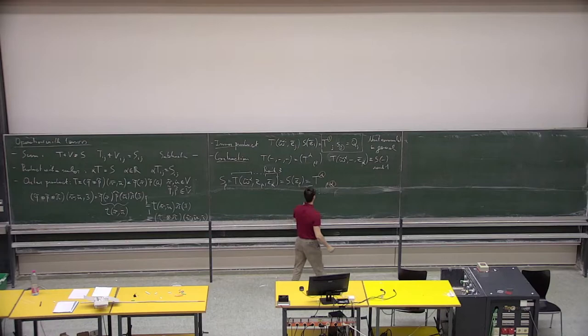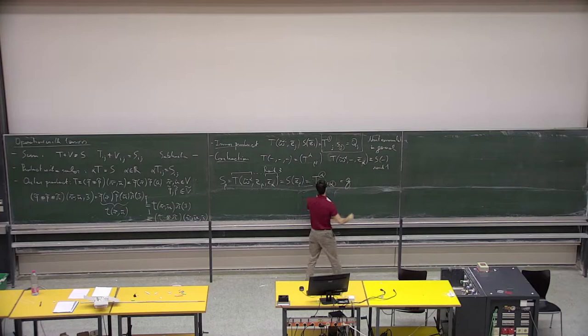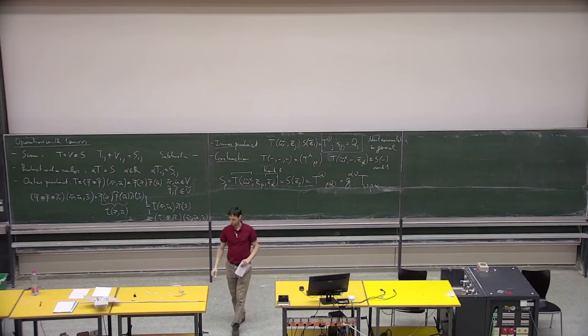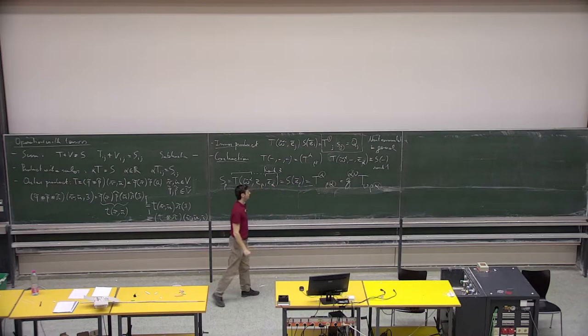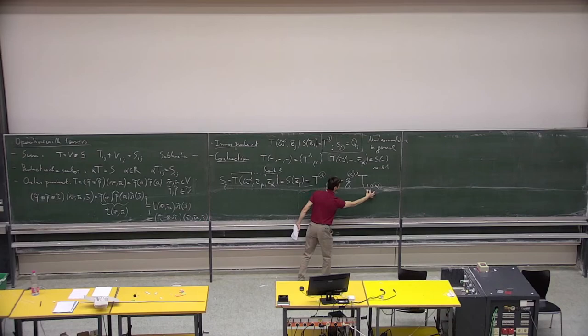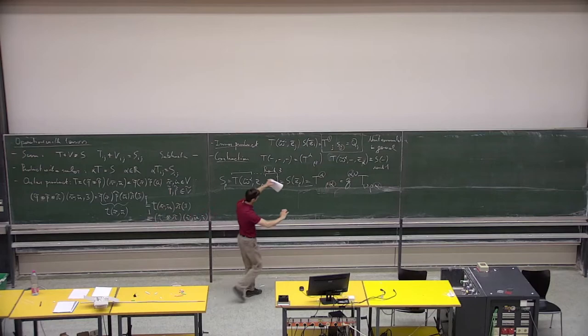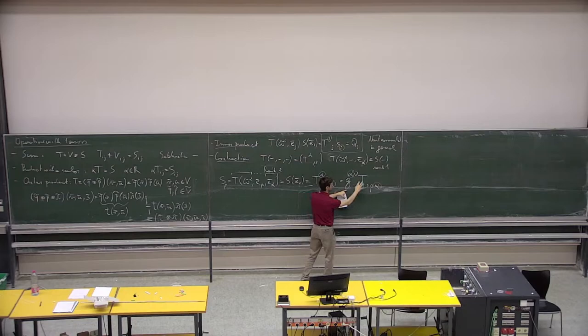Again, we have our repeated index here and here — that's the contraction. So from this tensor, we arrive at a tensor with lower rank. This happens because there are repeated indices up and down. This operation actually means taking the tensor and applying it to the metric in this way.